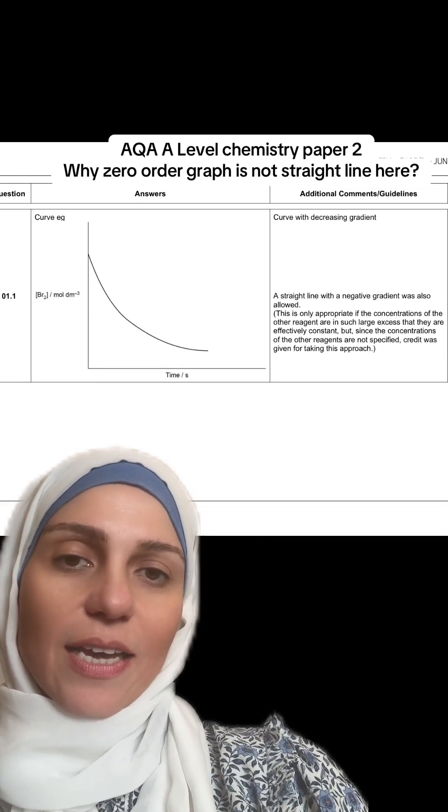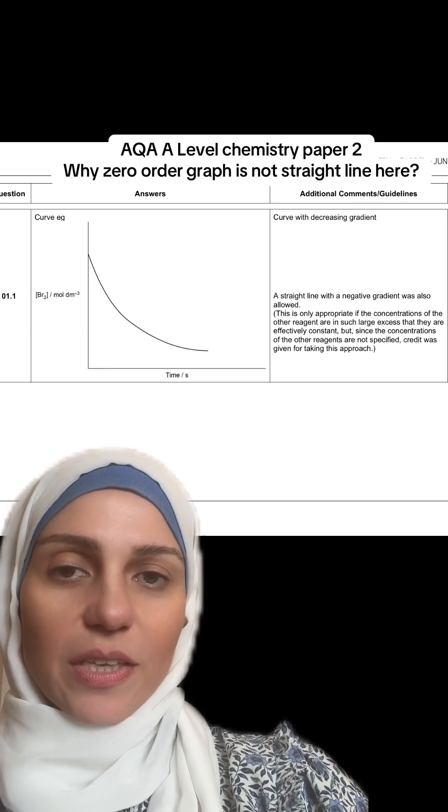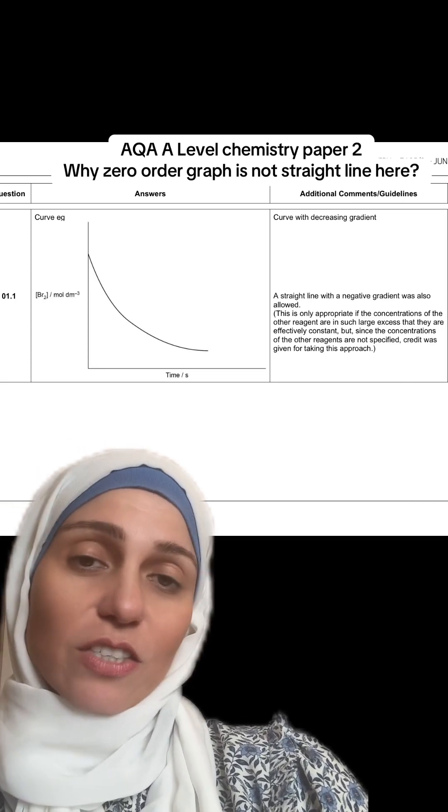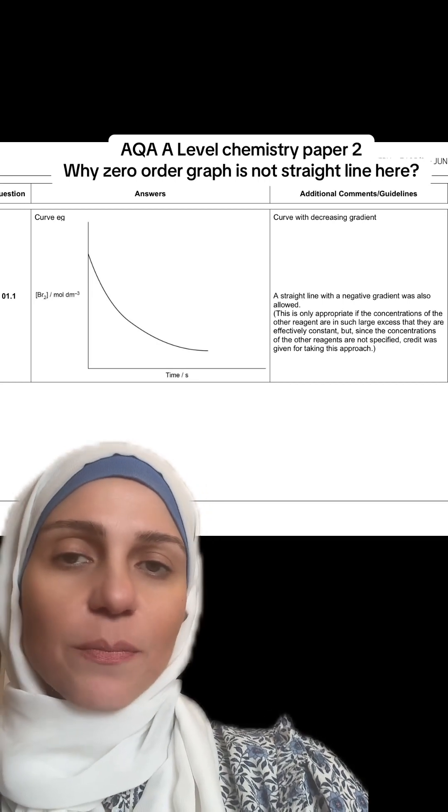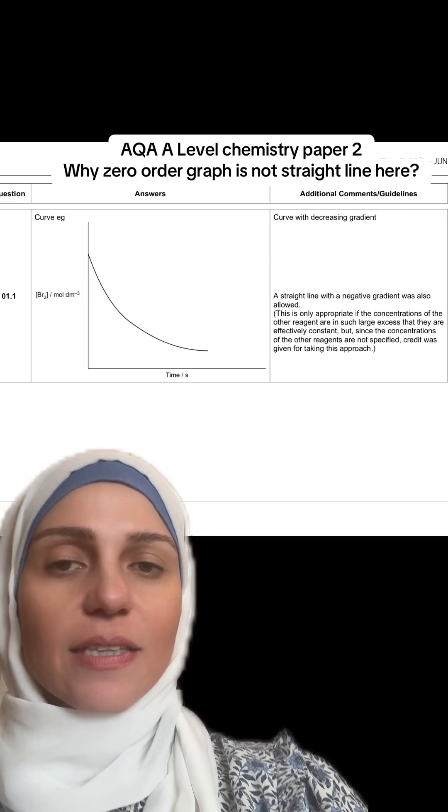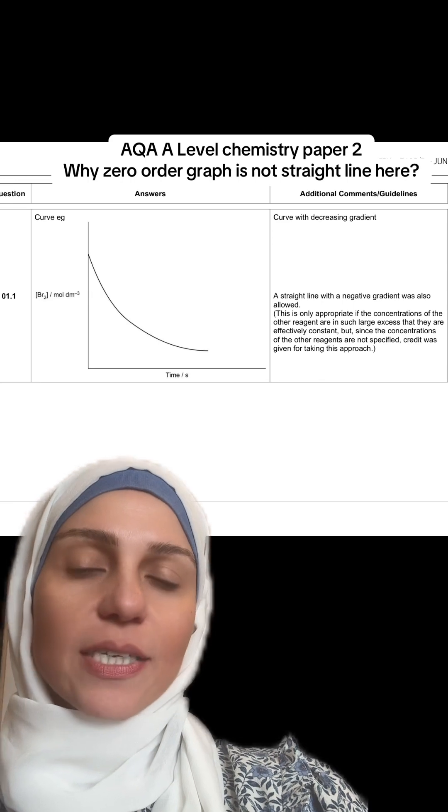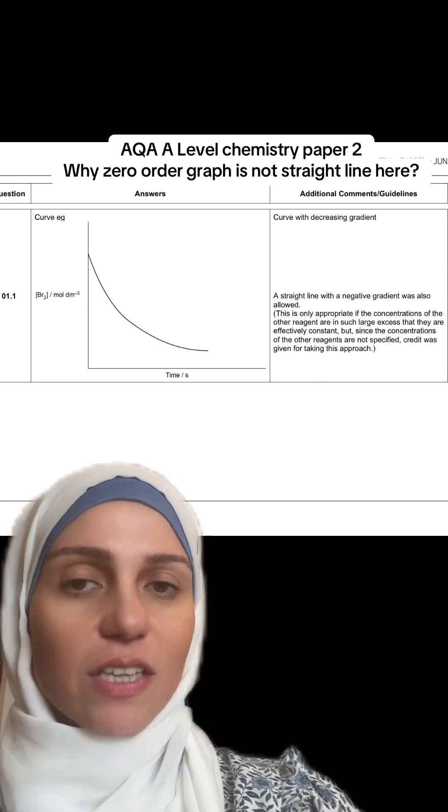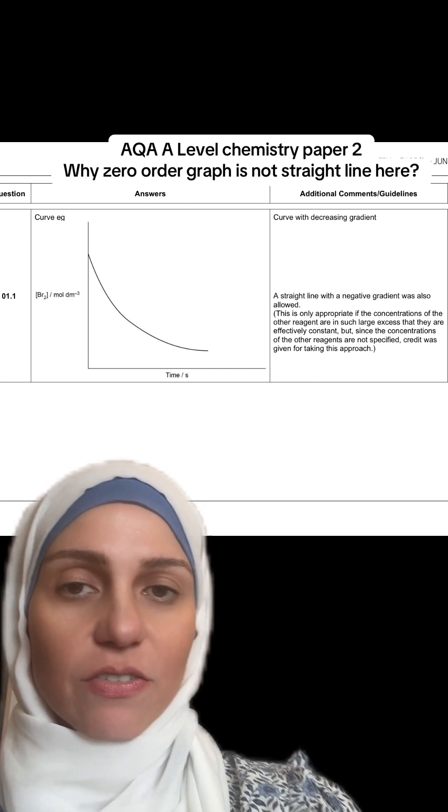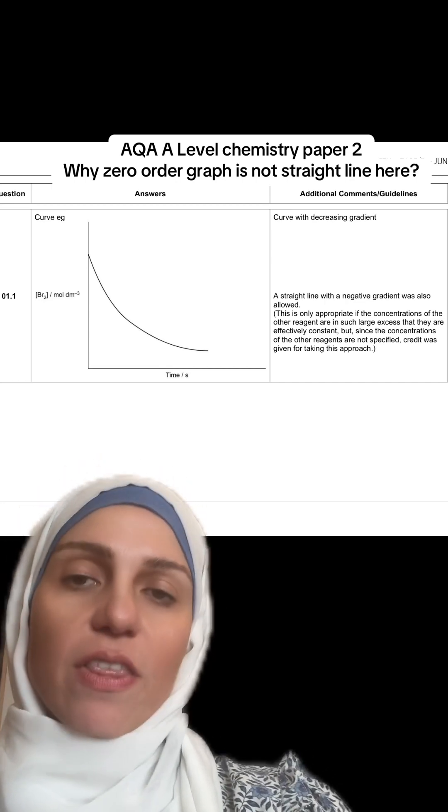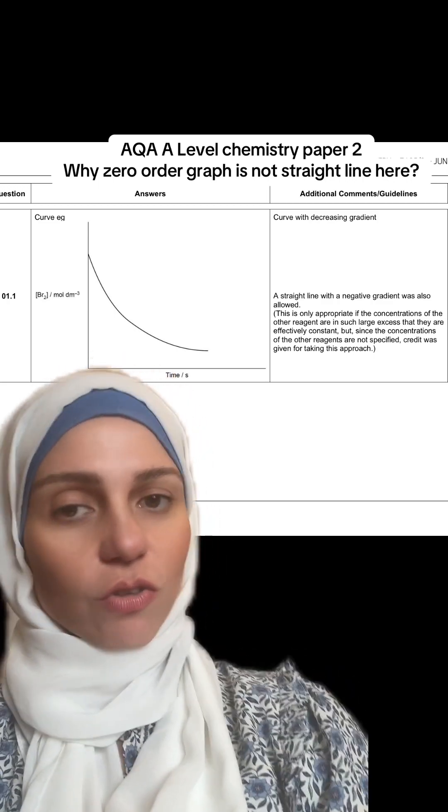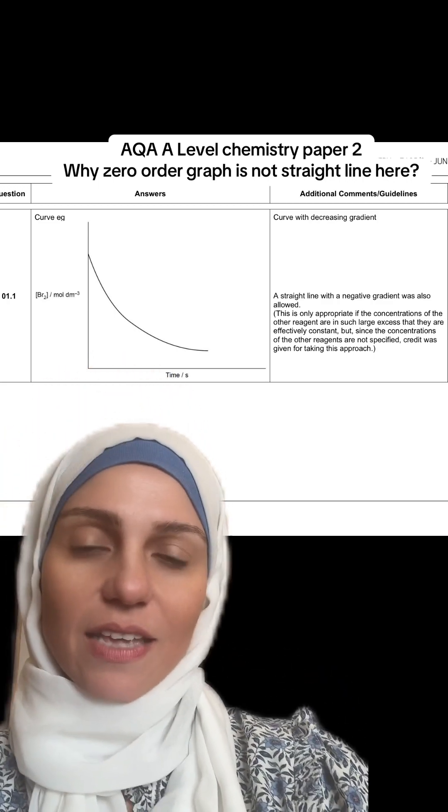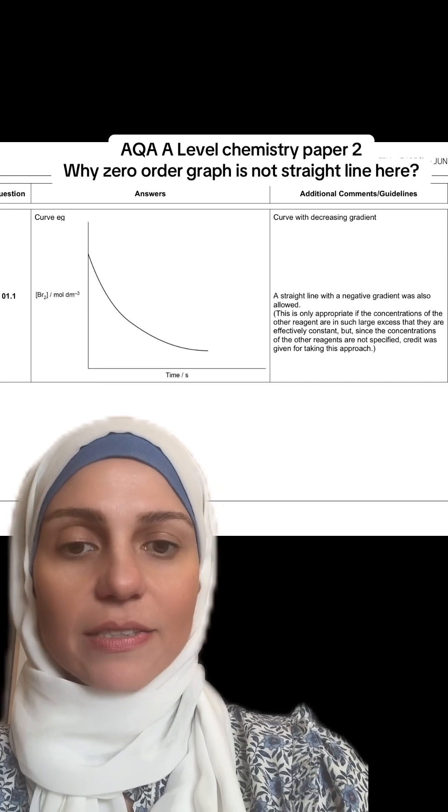you're going to find that it's actually curved instead of being a straight line, and you would wonder why even though it's zero order. This is because experimentally the bromine would exhibit the zero order curve as a straight line with negative gradient only if the other reactants are in excess, which is not the case here. They didn't state that the other reactants are in excess.